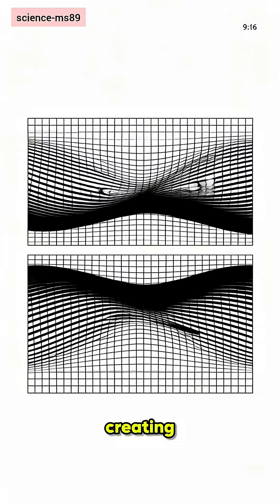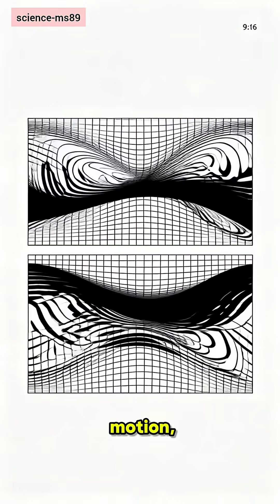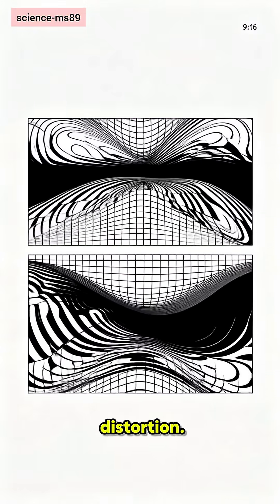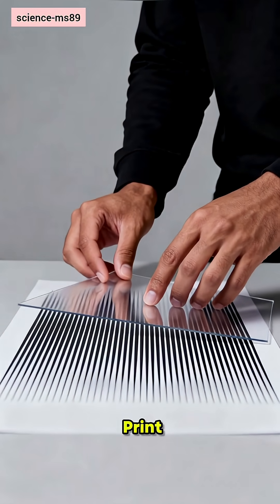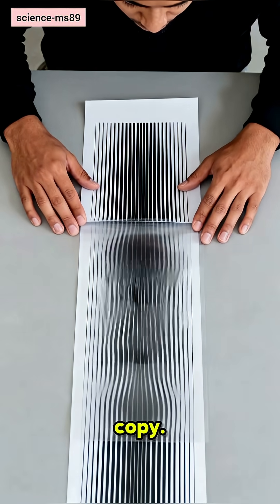Step one: print or display lines, overlay a transparent copy, then gently shift and watch ripples form.